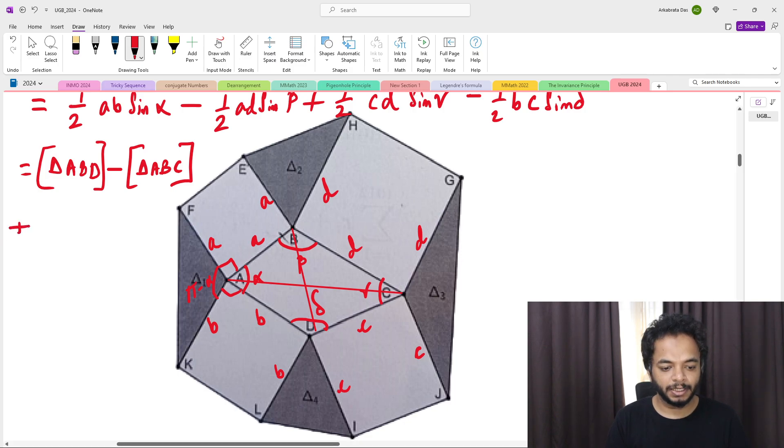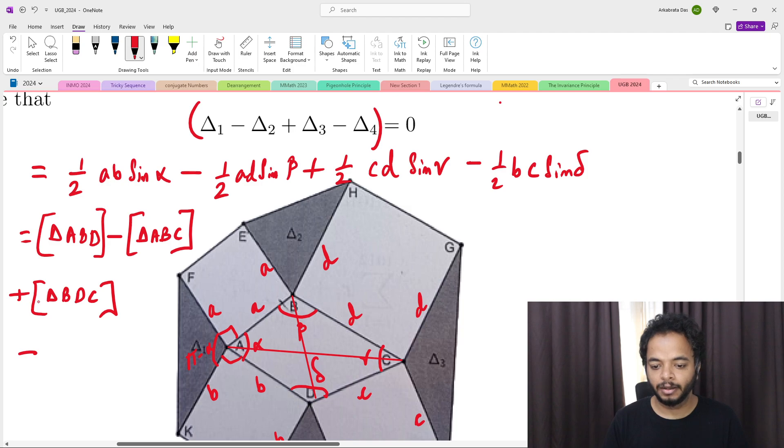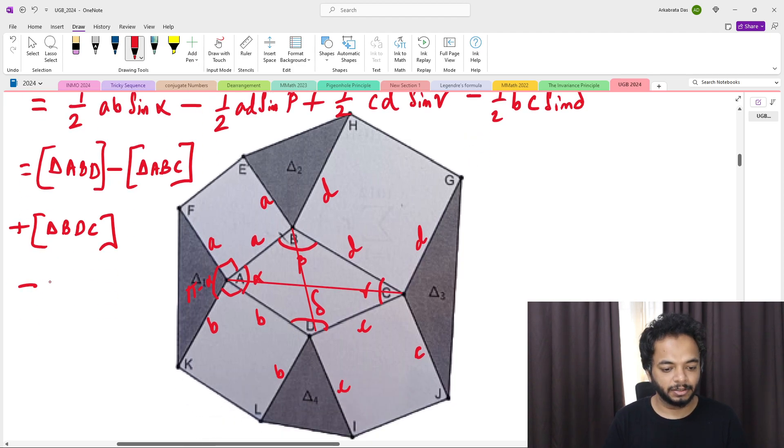Plus half of cd sin gamma is basically ad sin delta, so that's basically triangle ADC.